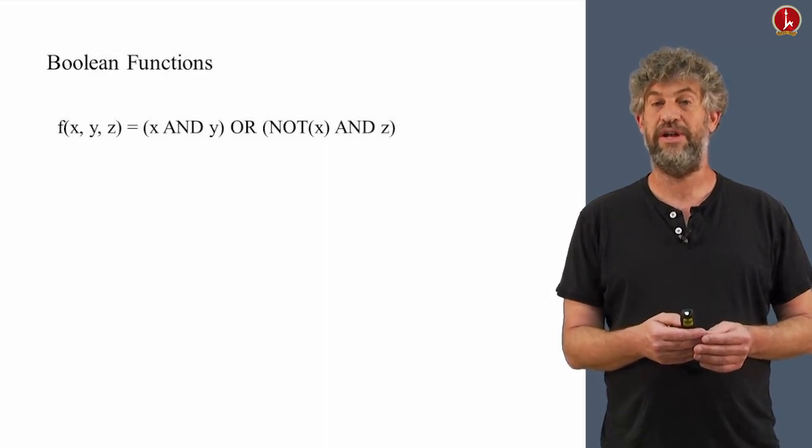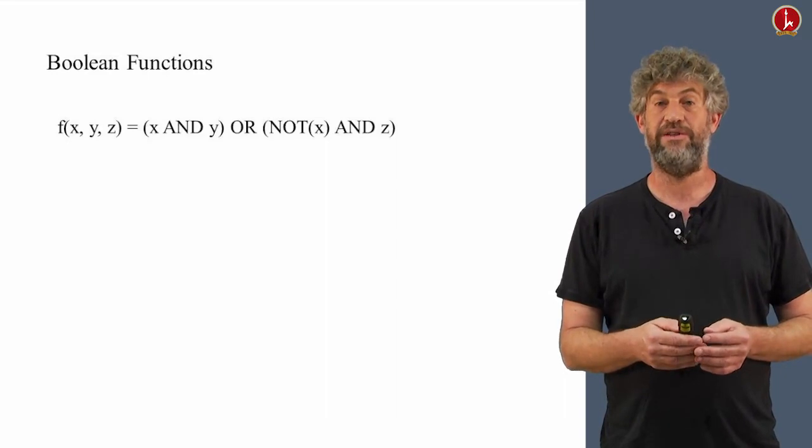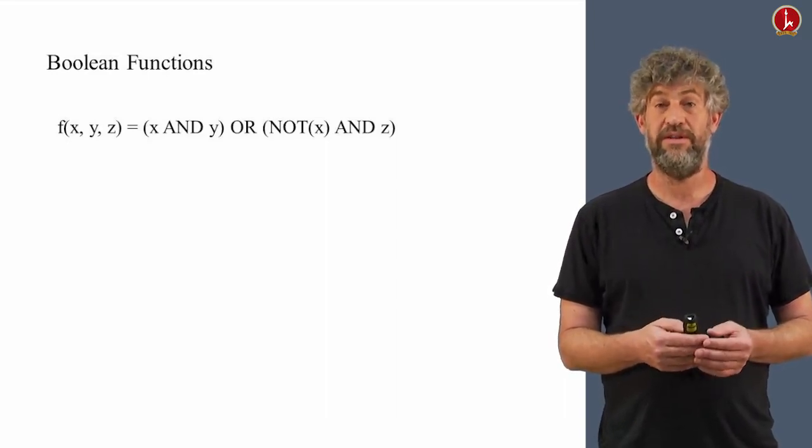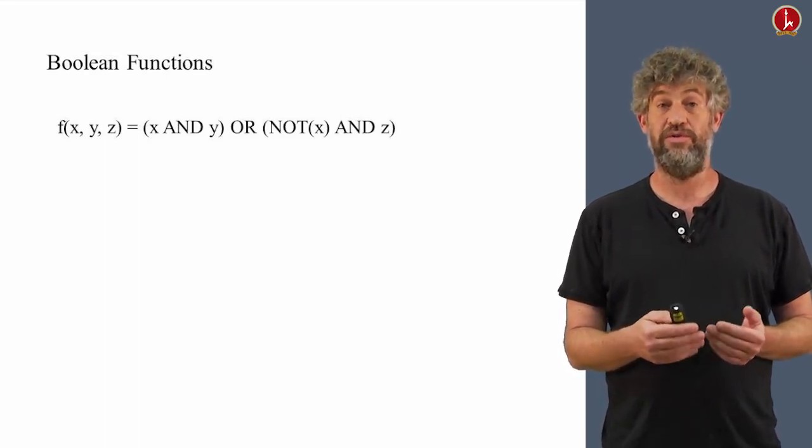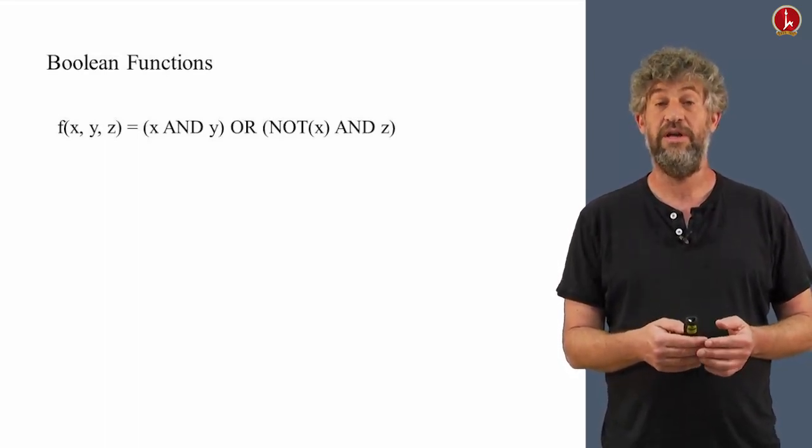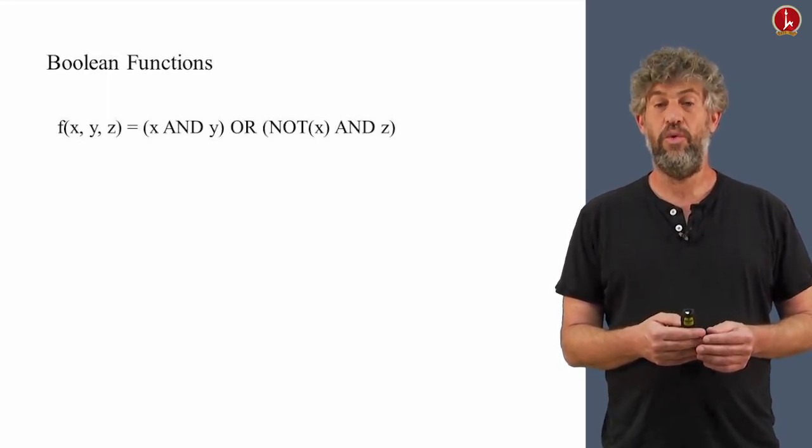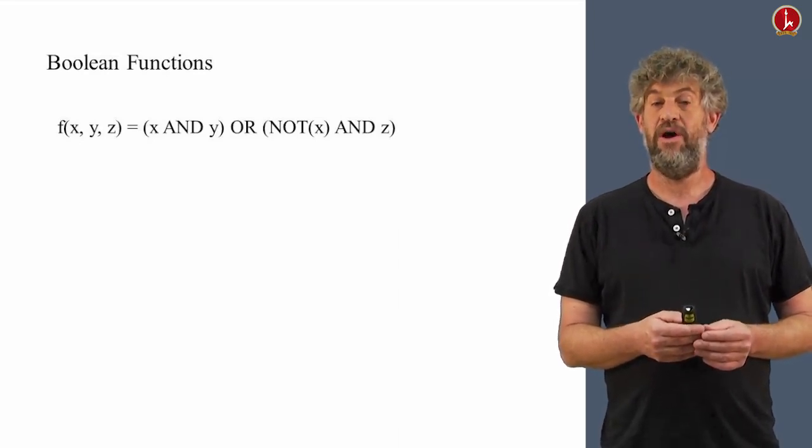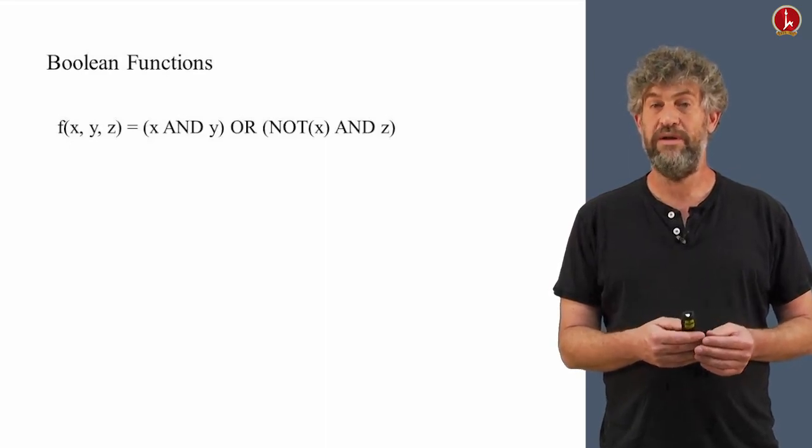For example, I can define a function, a function of three inputs x, y, and z, that is (x AND y) OR (NOT(x) AND z). Look at the parentheses to see the priority that I was thinking about. Of course, I could define any other function by any other Boolean formula, and that would give me a function. If we want to know what kind of function is that, we can actually list all the possible values of x, y, and z.